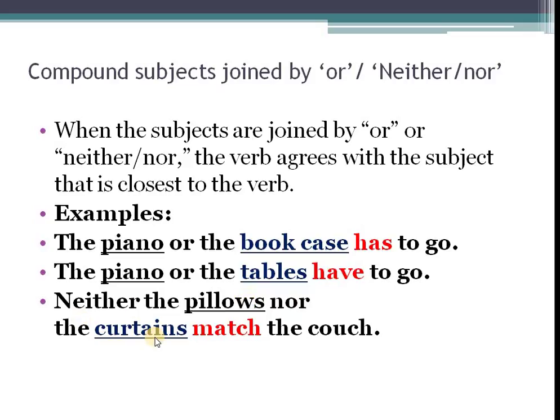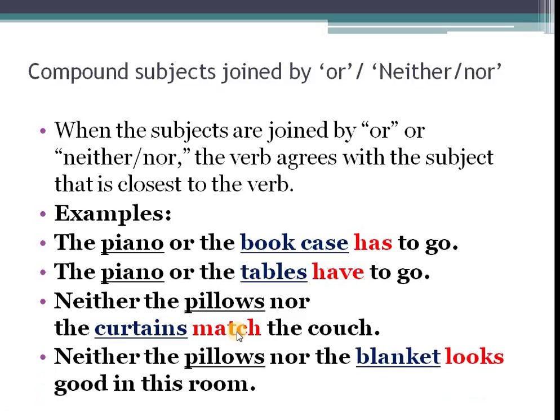Let's just look at another one. Neither the pillows nor the curtains. Both subjects are what? Plural. However, we're looking at the subject closer to the verb. And it takes the verb without S. Finally, neither the pillows nor the blanket. Pillows, plural. Blanket, singular. In this case, blanket that is singular is closer to the verb look. Looks. And so, blanket takes the verb ending with S.